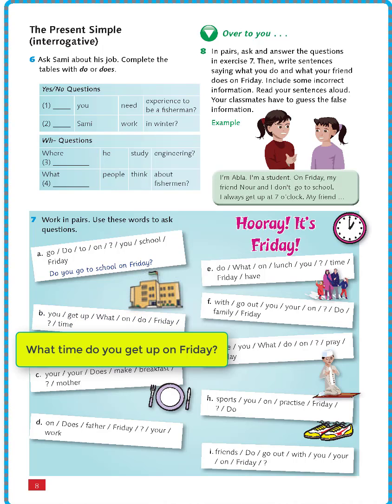We'll start with the WH-question word, then choose 'time' — meaning 'at what time'. Then 'do' as the auxiliary verb, then the subject 'you', then the verb 'get up', then 'on Friday', then the question mark. So it becomes: 'What time do you get up on Friday?'